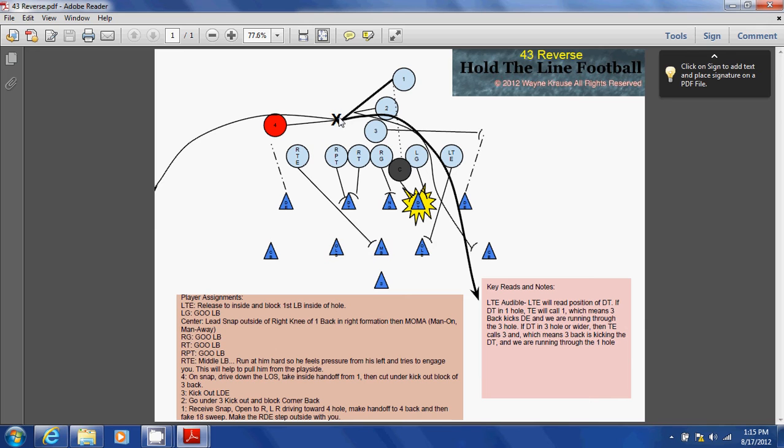Upon receiving the ball, the four back should accelerate, get into this hole, run underneath this kickout block by the three back coming up here, looking to peel inside. Because as you can see, the seam should be, if the left tight end is able to make his block and the two back is able to make his block, should be right through the middle here.